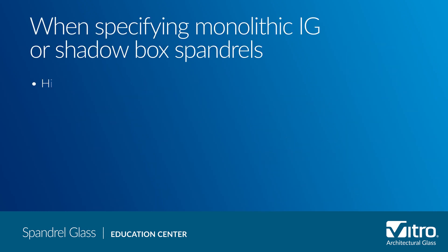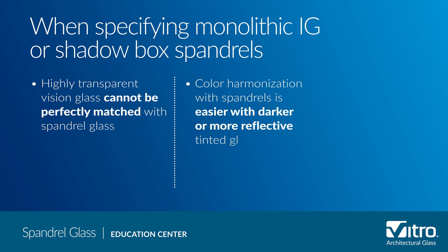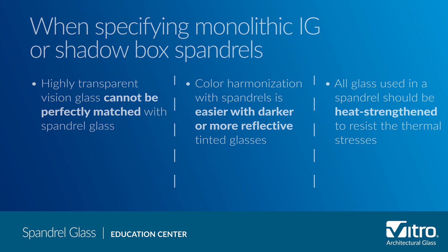When specifying monolithic, IG, or shadow box spandrels, there are some factors to keep in mind. First, highly transparent vision glass cannot be perfectly matched with spandrel glass. Second, color harmonization with spandrels is easier with darker or more reflective tinted glasses. Finally, all glass used in a spandrel should be heat strengthened to resist the thermal stresses associated with potential heat absorption and buildup.